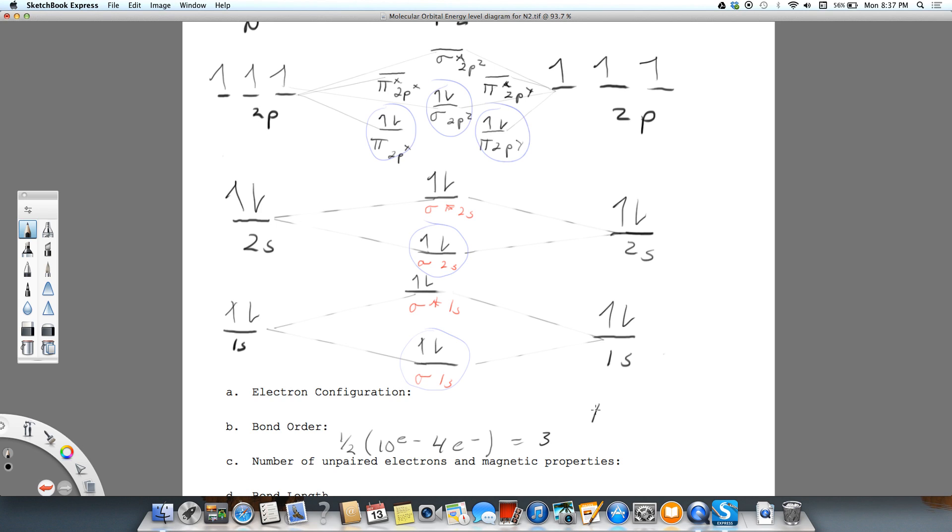So you know that nitrogen has a triple bond. And molecular orbital theory proves that out.